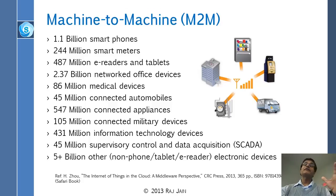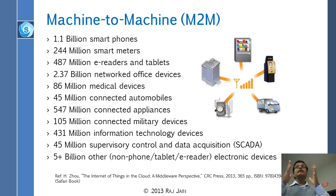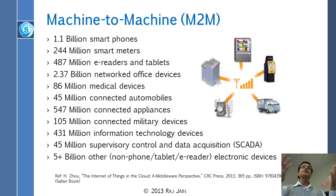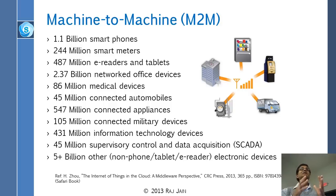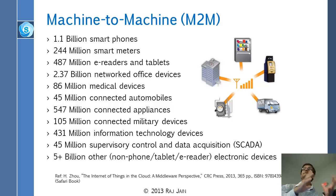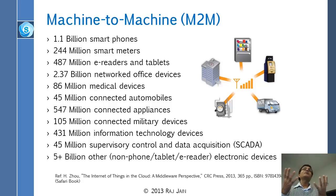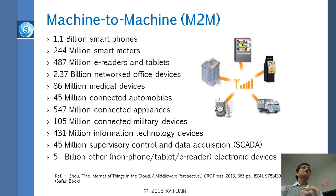A big part of Internet of Things is what we call machine-to-machine. Generally most communication is between people — it starts from a person and goes to a person: email, text, chatting, video. But certain things start on a machine and end on a machine, never going to a person — sensors, temperature controllers. Those are machine-to-machine, and since there are so many more machines than people, machine-to-machine communication will be much higher than people-to-people.